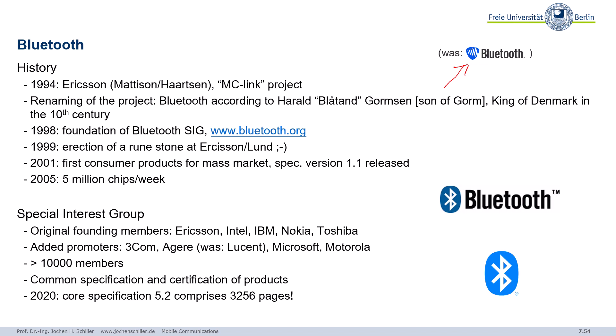Then there was the foundation of the Bluetooth Interest Group. There was a rune stone showing this event. First consumer products appeared around 2000–2001, and by 2005 five million chips per week were produced. The Special Interest Group had five initial founding members and now has many thousands more. The specification is available through the SIG, which also does product certification. Today the core specification comprises more than 3,200 pages — it started as a simple cable replacement but is now quite complex.